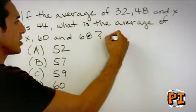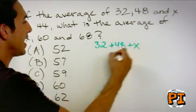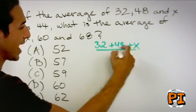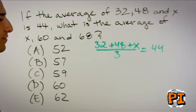In this case, you know that 32, 48, and x gives you an average of 44. There are three numbers, so you add them up. You divide by 3, which is equal to 44.